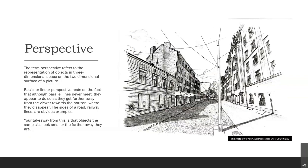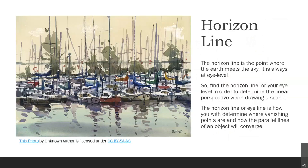Your takeaway is that objects the same size look smaller the farther away they are. The horizon line is the point where the earth meets the sky — it's always at eye level. Find the horizon line or your eye level in order to determine the linear perspective when drawing a scene. The horizon line is how you determine where vanishing points are and how the parallel lines of an object will converge.